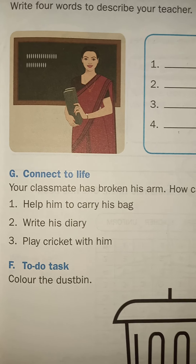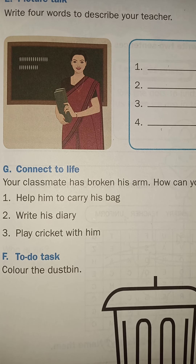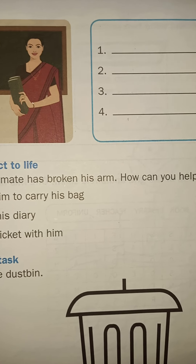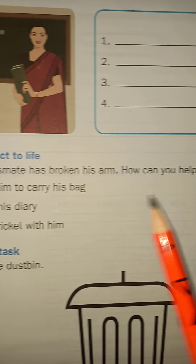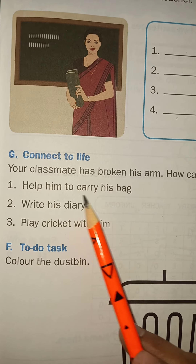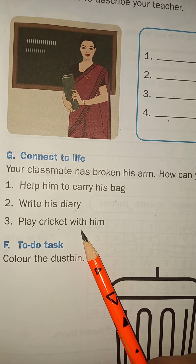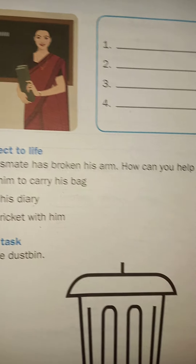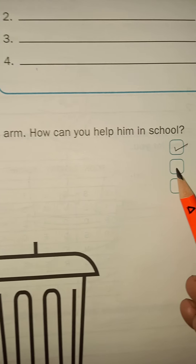The next one: our classmate has broken his arm — classmate means your school friend. How can you help him in school? Help him to carry his bag, write his diary, or play cricket with him. We have to write: help him to carry his bag — take this one also — write his diary also, right? Both are correct, so we take both.